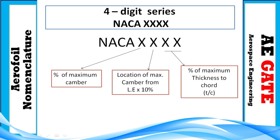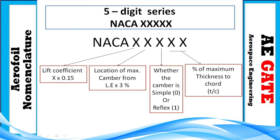In the four-digit series, consider the digits one, two, three, four. The first digit expresses the maximum camber as a percentage — so '1' means 1% maximum camber. The second digit is the location of maximum camber from the leading edge in tenths of the chord — '2' means 20% of chord. The last two digits always denote the maximum thickness-to-chord ratio, so '12' means 12%.